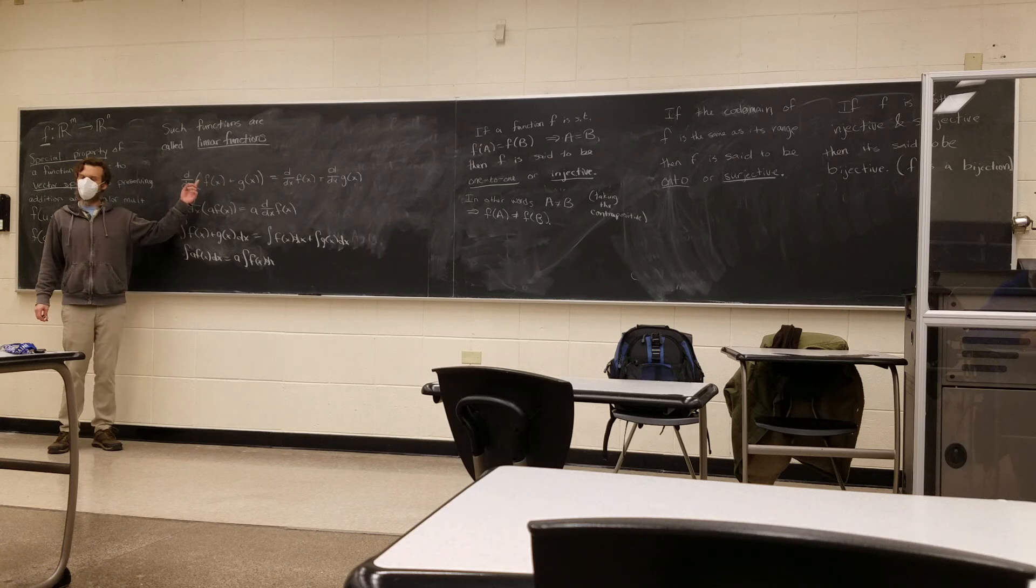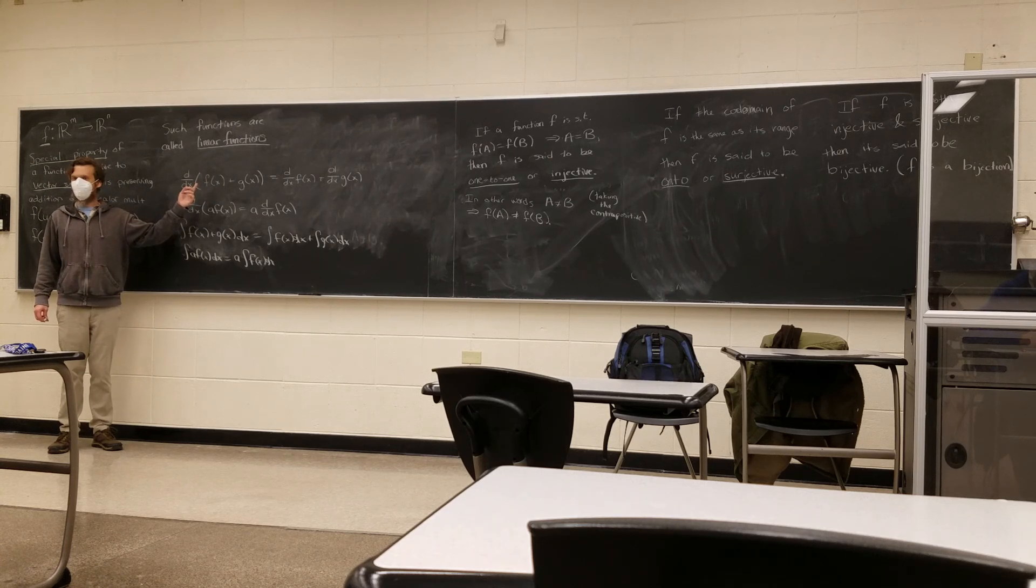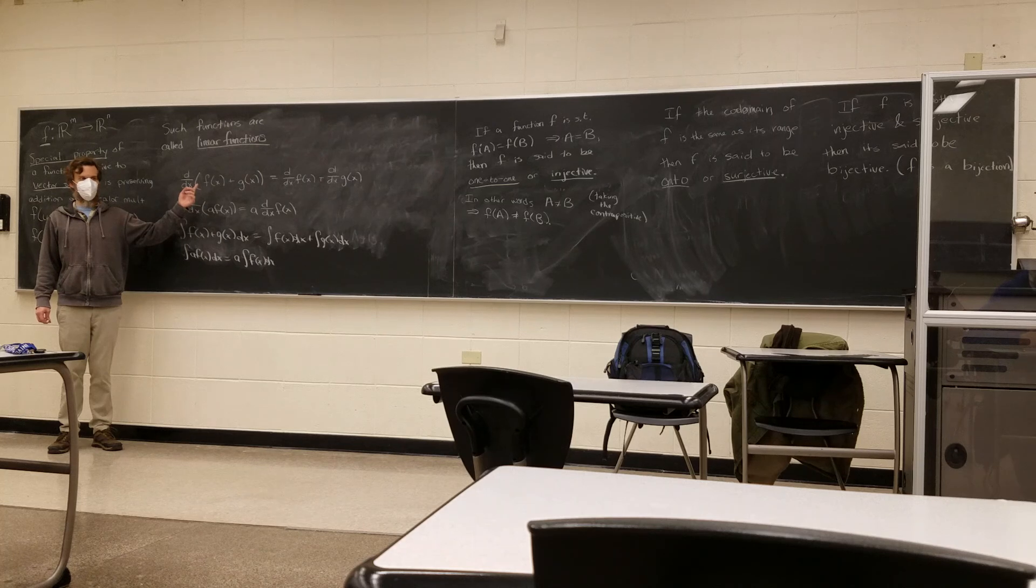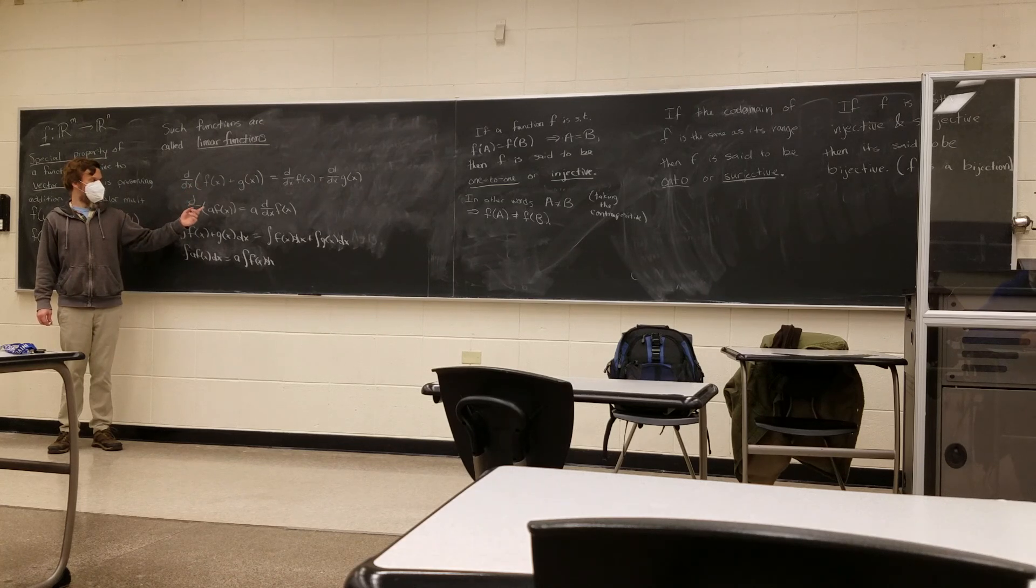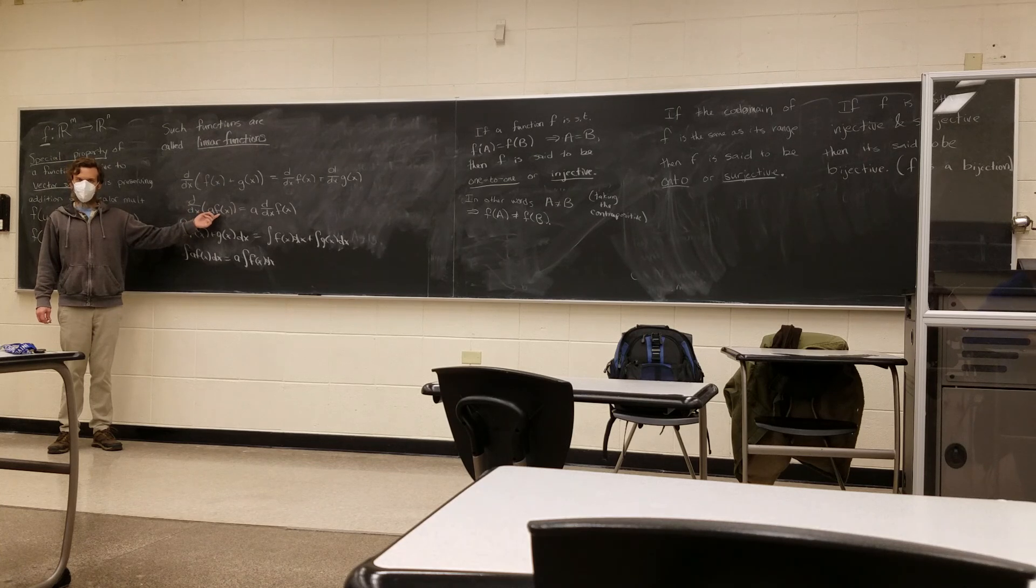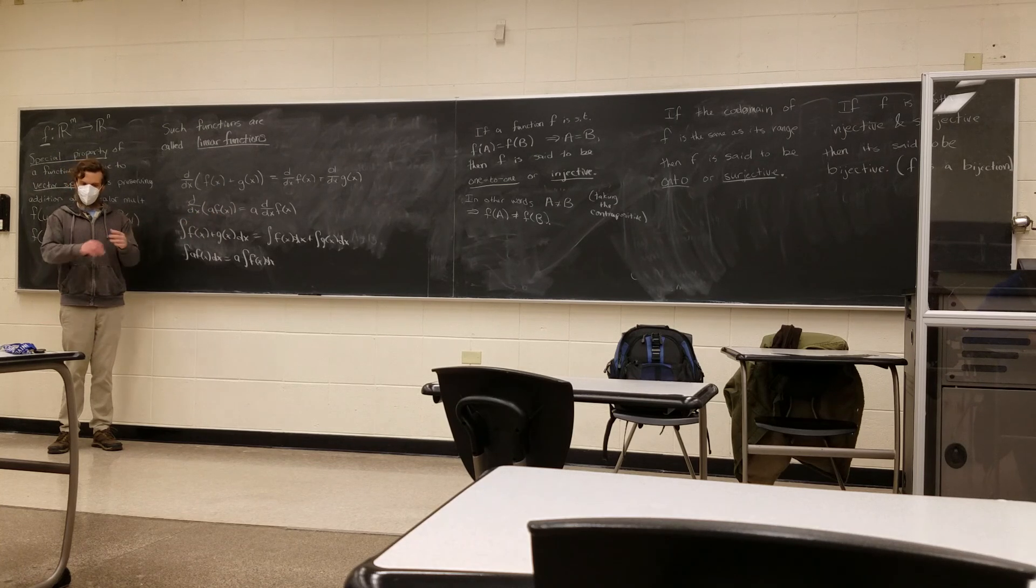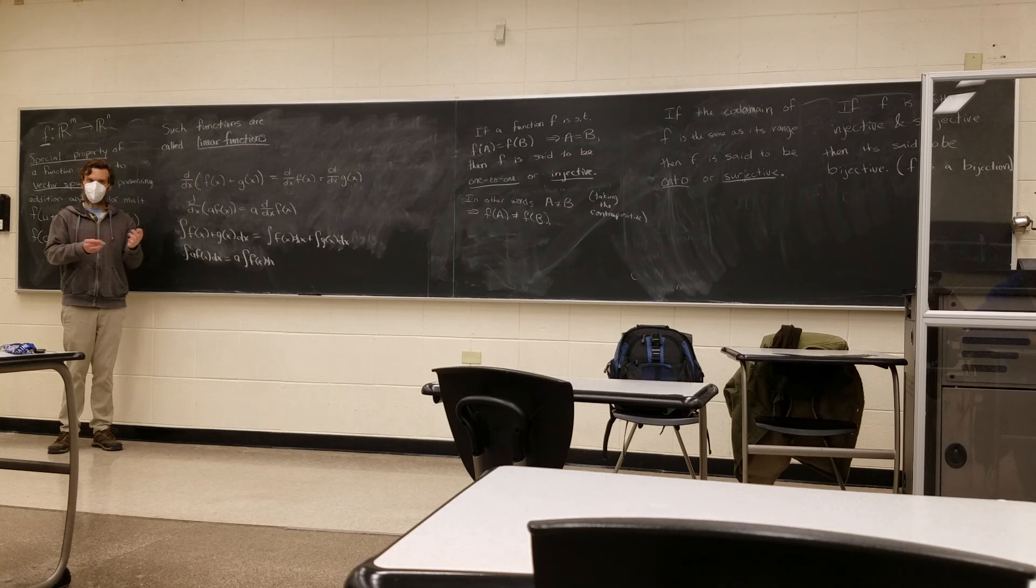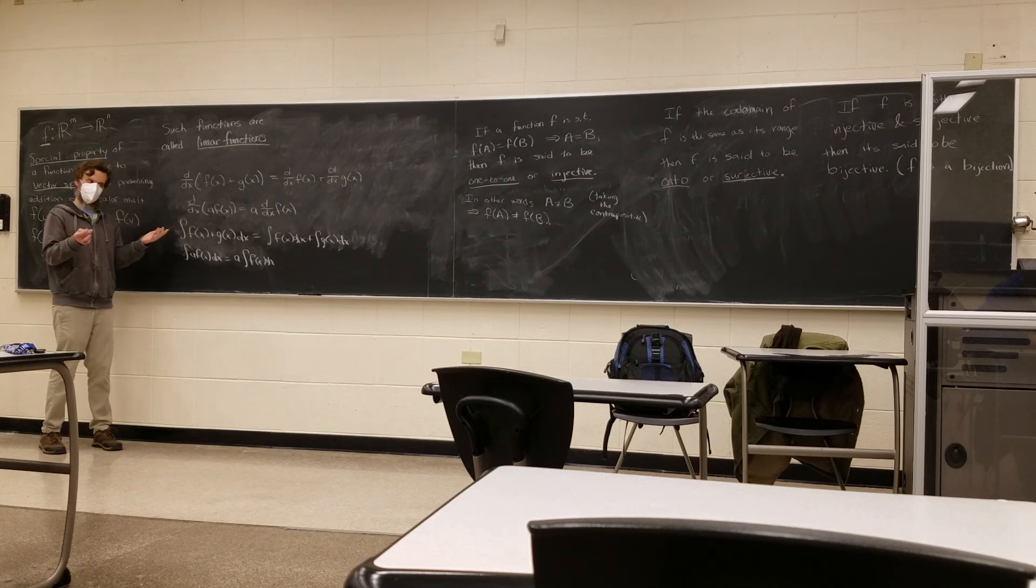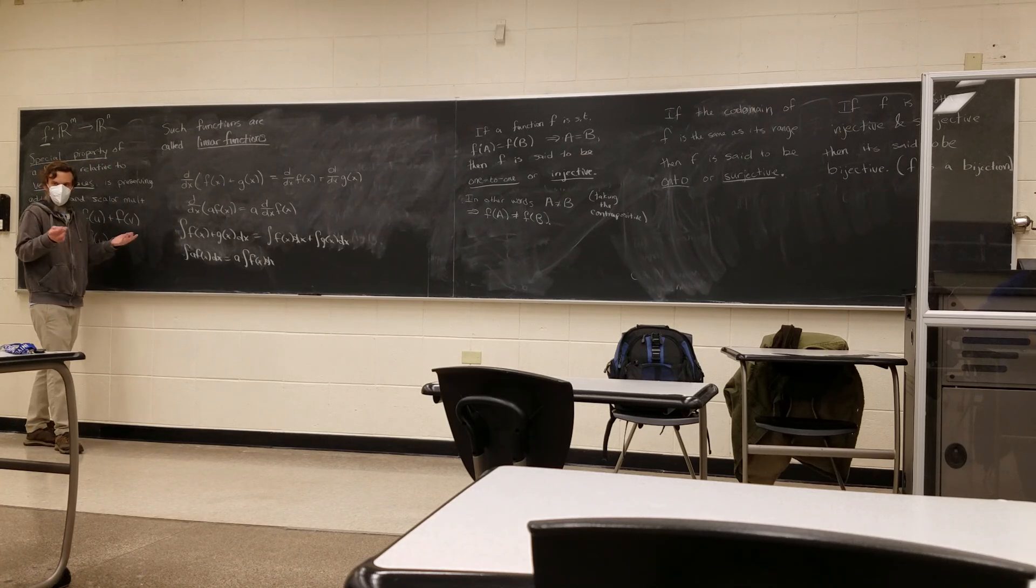So these were called linear operations that you could perform on functions. You could really think of these functions as forming a vector space. You can add functions together to give a new function, just add their output. And you can multiply a scalar by a function to get a new function. So it's really closed under these operations.